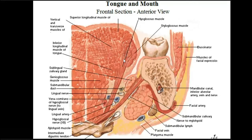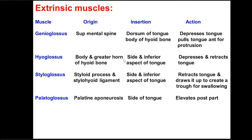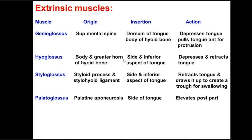The extrinsic muscles: genioglossus arises from the superior mental spine, attaches to the dorsum of the tongue and body of hyoid bone — depresses the tongue and pulls it anteriorly for protrusion, the only one which pulls the tongue forward. Hyoglossus arises from the body and greater horn of the hyoid bone, passes to the side and inferior aspect of the tongue — depresses and retracts the tongue backward. Styloglossus arises from the styloid process and styloid ligament, passes to the side and inferior aspect of the tongue — retracts the tongue and draws it up to create a trough for swallowing, making the superior surface concave.